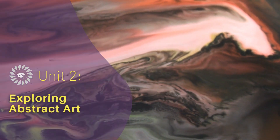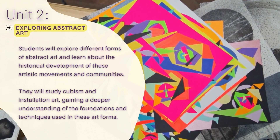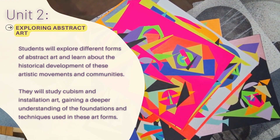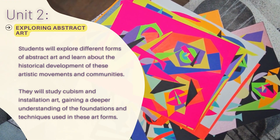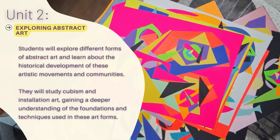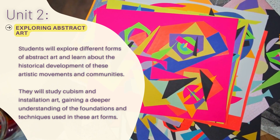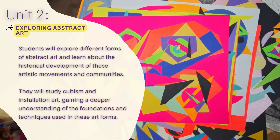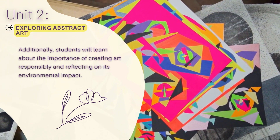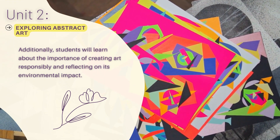Unit 2: Exploring Abstract Art. Students will explore different forms of abstract art and learn about the historical development of these artistic movements and communities. They will study cubism and installation art, gaining a deeper understanding of the foundations and techniques used in these art forms. Additionally, students will learn about the importance of creating art responsibly and reflecting on its environmental impact.